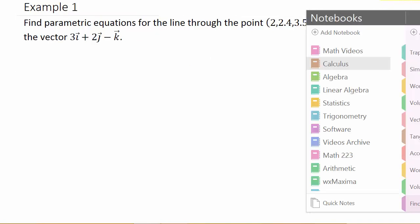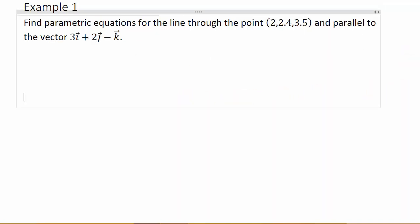So let's take a look at our first example. It says find parametric equations for the line through the point (2, 2.4, 3.5) and parallel to the vector 3i + 2j - k.